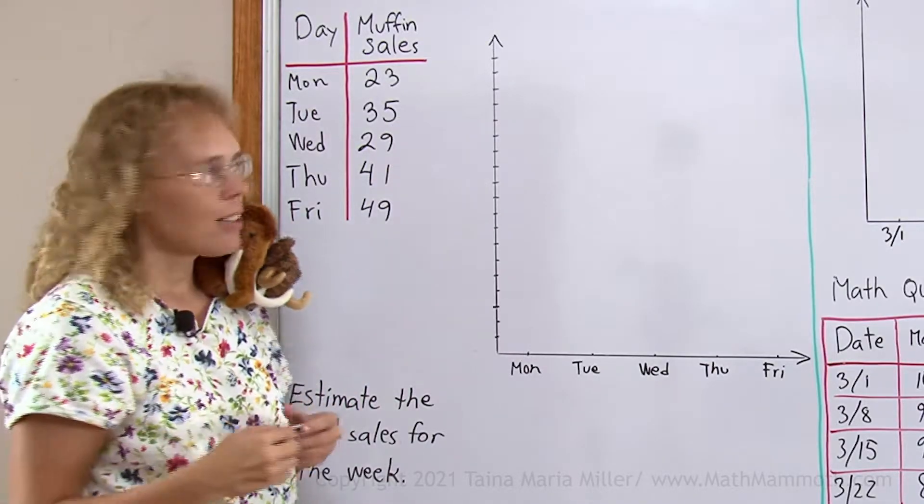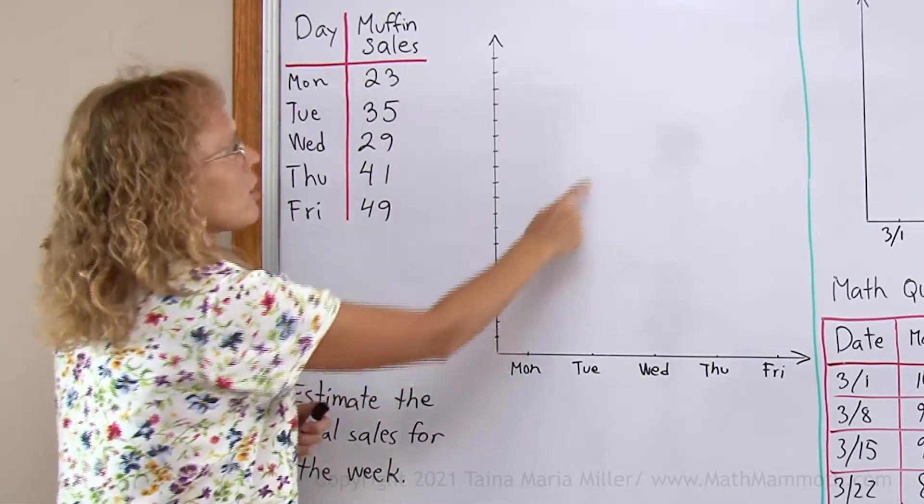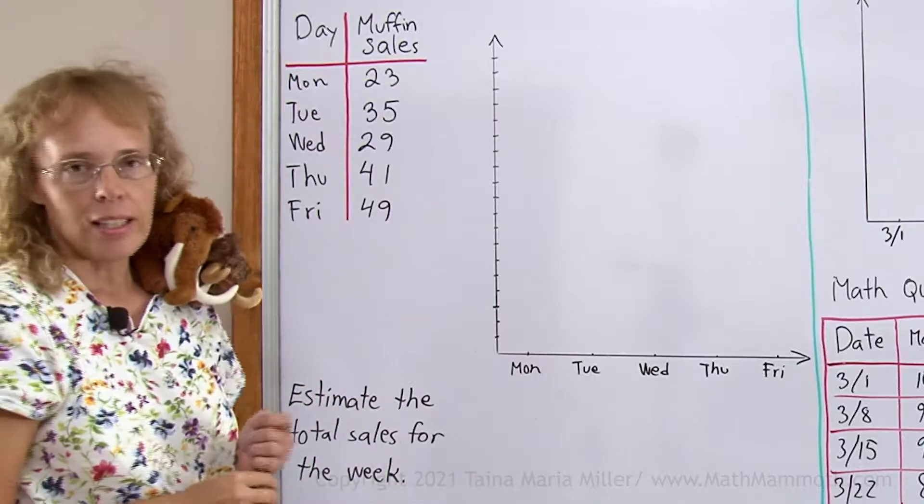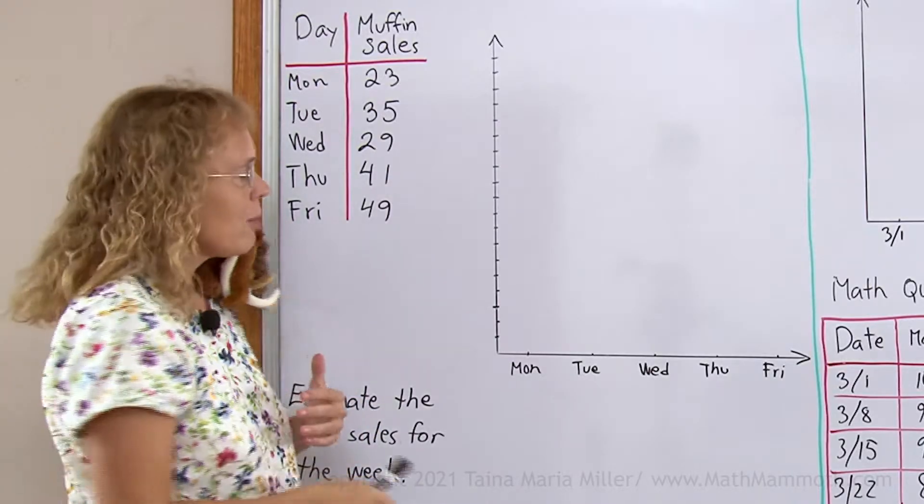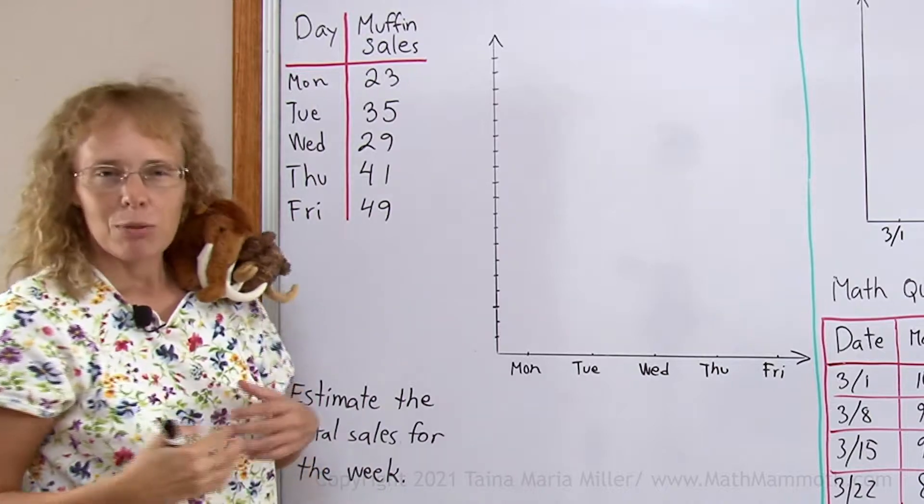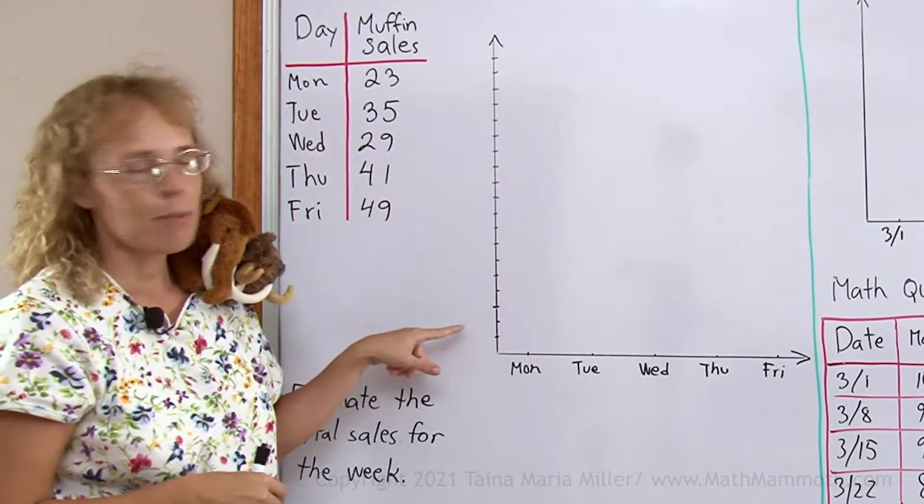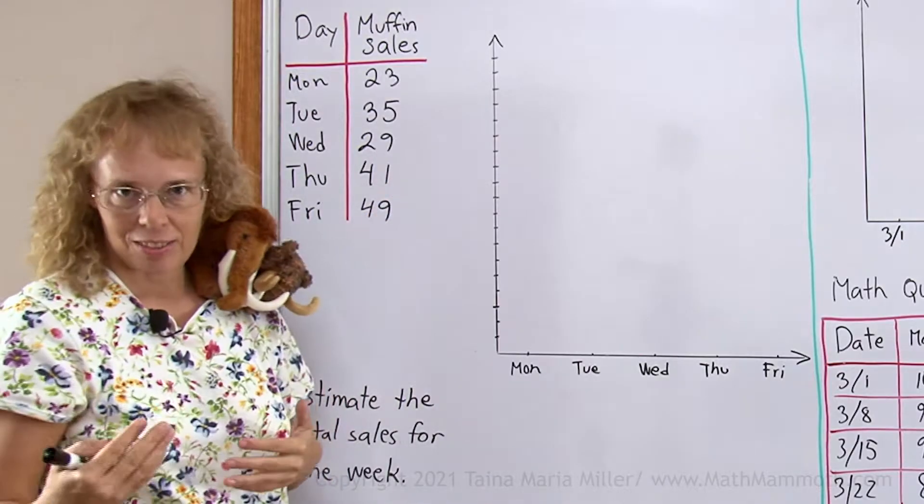Now, to do my line graph, I will need to draw one dot for each of these numbers somewhere here. Before I do that, I need to determine the scale of this axis. And for that, what's the biggest number here? It's 49. So I need my scale to go up to at least 50, right?